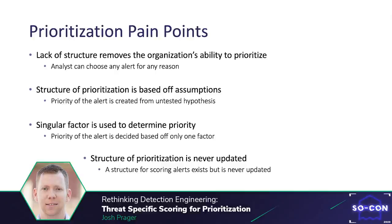The second issue is that the structure of prioritization is based off assumptions. The scoring structure actually exists — the team put in the time to create the prioritization structure — but it is inherently flawed because it is stagnant and has never been tested. The analysts are prioritizing alerts based on factors they think are malicious, but have not yet tested that hypothesis.